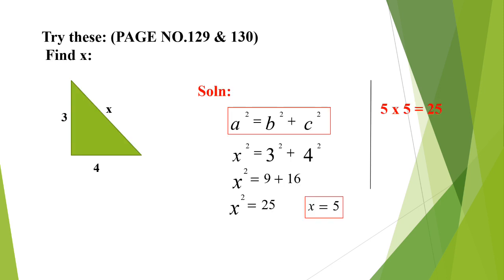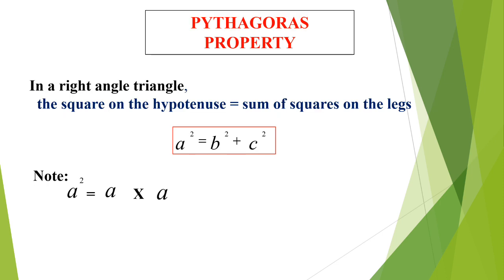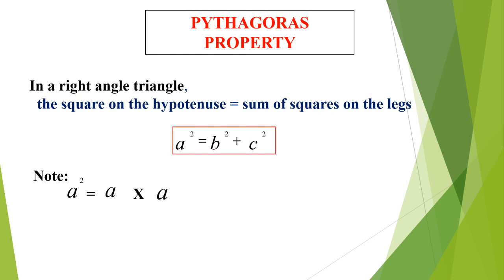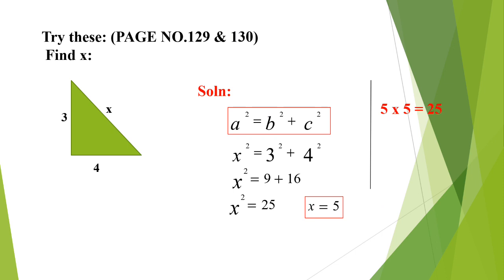Now we move to the problem. In the right angle triangle, the hypotenuse is the highest side. Here, 3 and 4 are the legs and x is the hypotenuse. Using the Pythagoras property: hypotenuse squared equals the sum of the leg squares. So x squared equals 3 squared plus 4 squared. 3 squared is 3 times 3 equals 9. 4 squared is 4 times 4 equals 16. Adding: 9 plus 16 equals 25. So x squared equals 25.